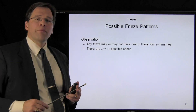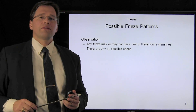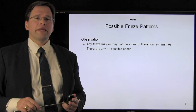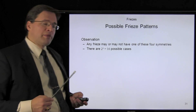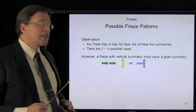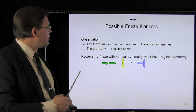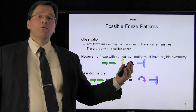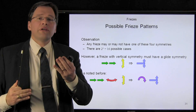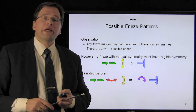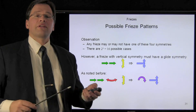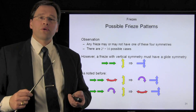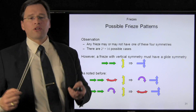Every frieze may or may not have one of these four subsequent symmetries, and therefore that gives us a possibility of 2 to the 4, or 16 possible combinations. However, not all combinations are unique. If you have translational symmetry and vertical symmetry, then you must have glide symmetry as well. If you have translational symmetry with horizontal symmetry and vertical symmetry, you must also have rotational symmetry, and because you have vertical symmetry, you must also have glide symmetries. Similarly, if we have translational, rotational, and vertical symmetry, we must also have horizontal and glide symmetries.